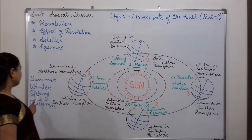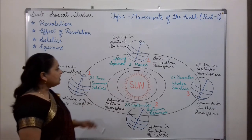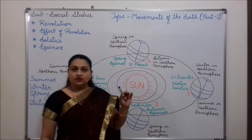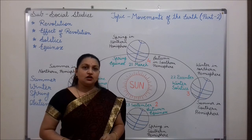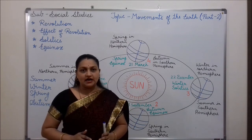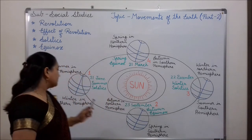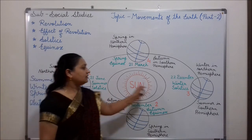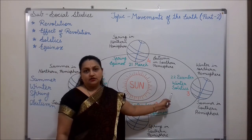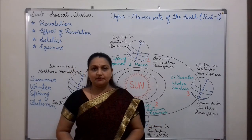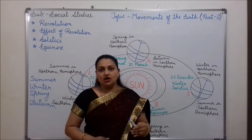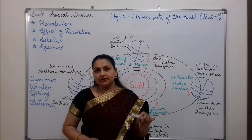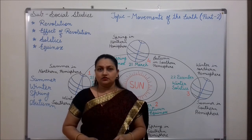Next is spring season. It falls between winter and summer. It remains for the months of February and March. Next, autumn season. It falls between summer and winter, that means in the month of September. During autumn, the duration of day begins to fall.